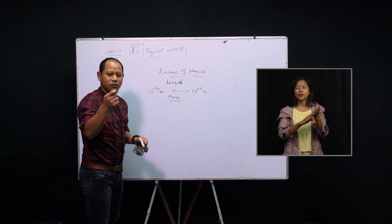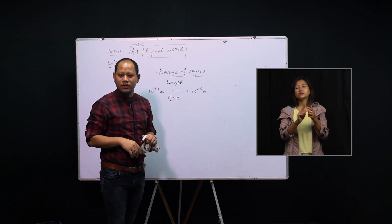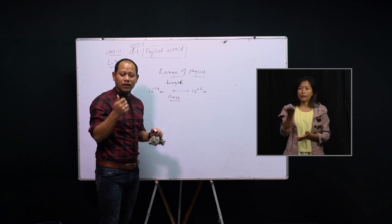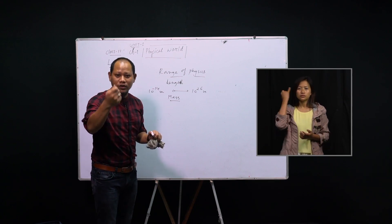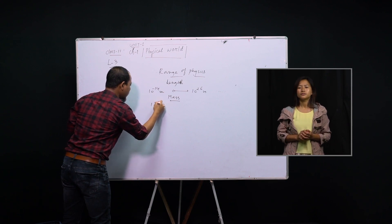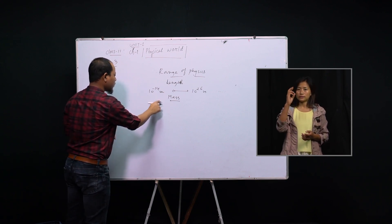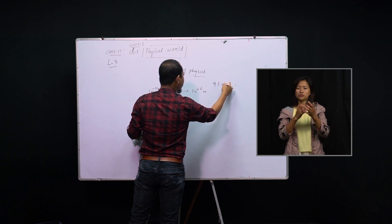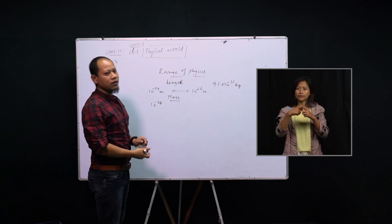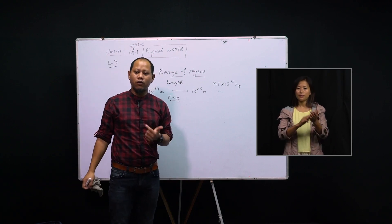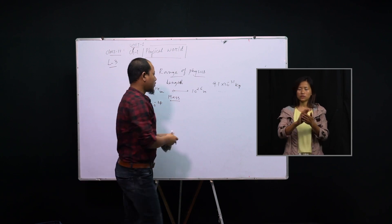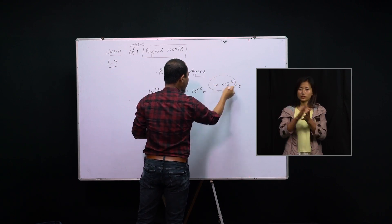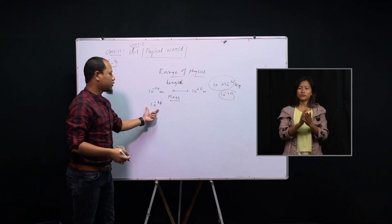Just imagine — we can measure the diameter of the whole universe, which is 10²⁶ meters, more than billions, more than trillions. This is the range of physics in terms of length. In terms of mass, physics can measure the mass of an electron, which we cannot see with our naked eyes. The mass of an electron is 9.1 × 10⁻³¹ kg, and its order of magnitude is 10⁻³⁰ because 9.1 is very close to 10.